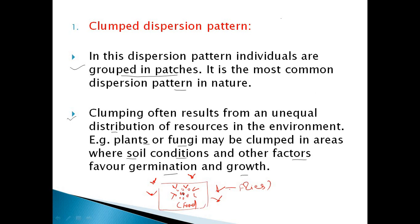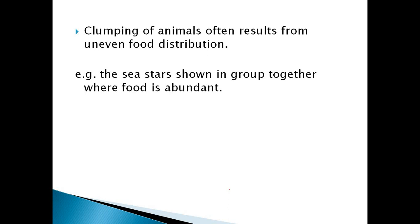For example, where plants and fungi get more food and light, the population will increase, forming patches. Animals also show clumping due to uneven food distribution, because food is available according to the favorable surrounding environment. This uneven availability leads to uneven distribution of population. Examples include sea stars, which are found grouped together where food is abundant.